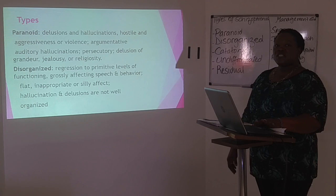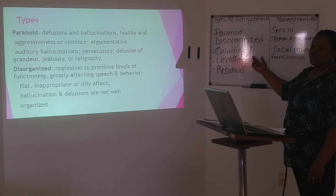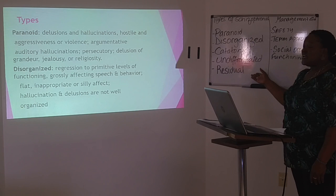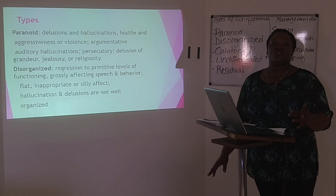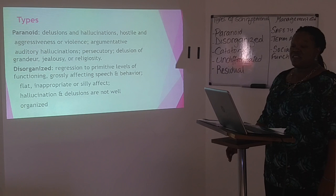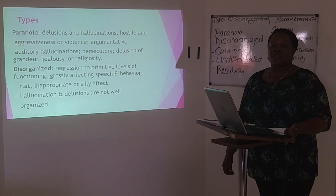There are five primary types of schizophrenia: paranoid, disorganized, catatonic, undifferentiated, and the residual type. The name defines what happens during each stage. For paranoid schizophrenia, we will see an increased presentation of delusions, hallucinatory experiences, and hostile, aggressive, or violent argumentative behavior.